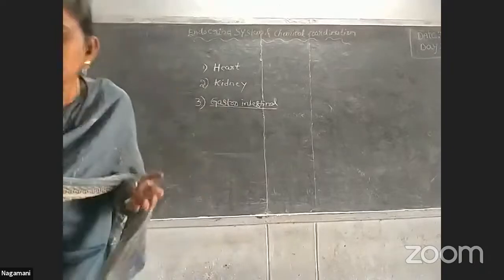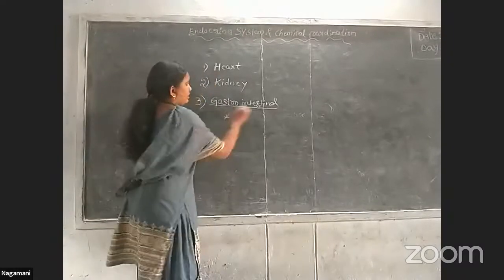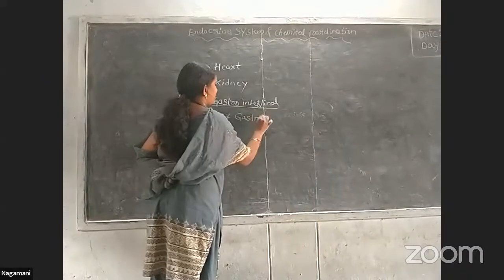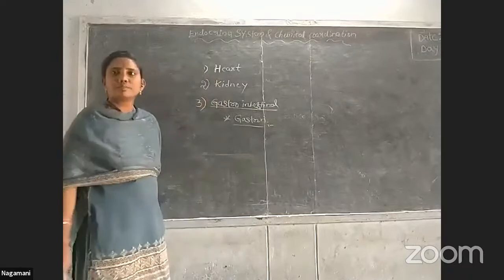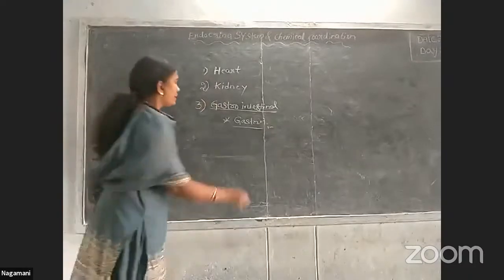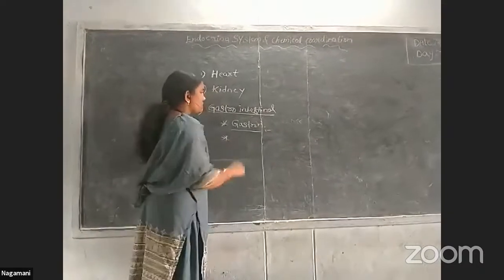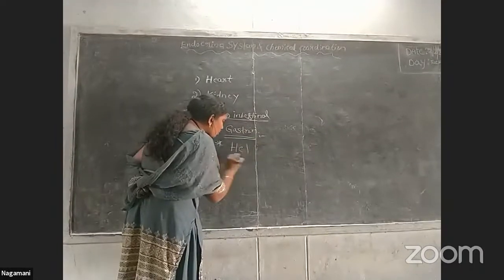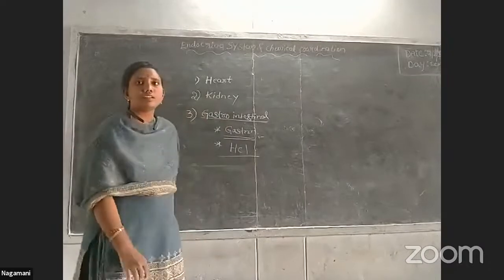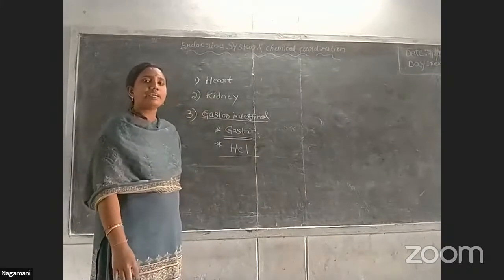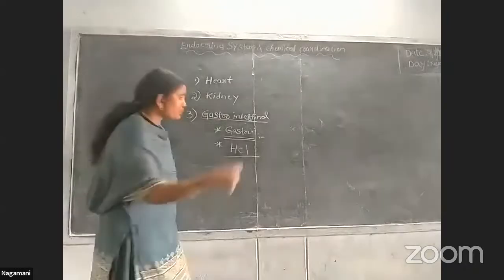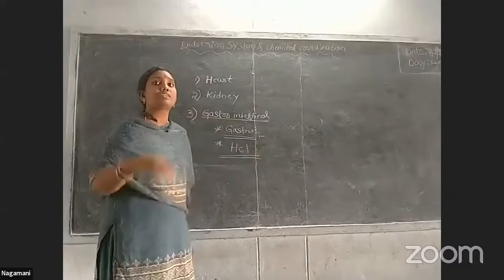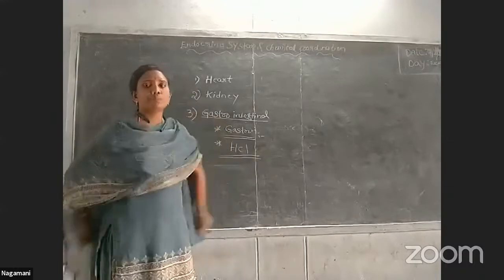Another hormone released from the gastric glands is gastrin. Gastrin stimulates the secretion of hydrochloric acid (HCl) in the stomach region, which is used for hunger pangs and digestion of different food particles.